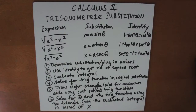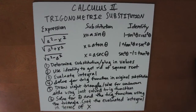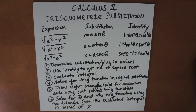And then you solve for the trig function in the original substitution. Then you draw a right triangle and solve for the unknown side using the just-solved trig function. And finally, you solve for theta and the trig function using the triangle to get the evaluated integral in terms of x.